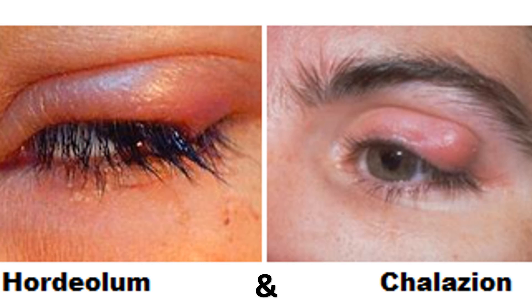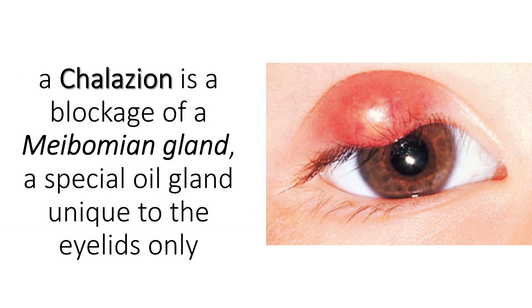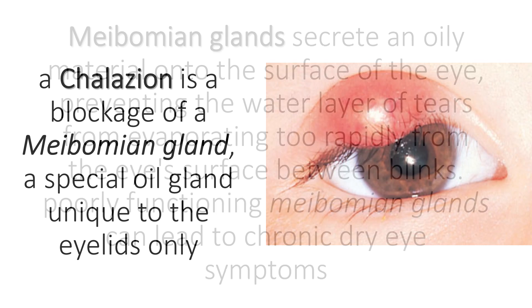The two types are hordeolum and chalazion. A hordeolum is a blockage of one of the sweat glands or oil glands found in the skin of the eyelid. A chalazion is a blockage of a meibomian gland, a special oil gland unique to the eyelids only.